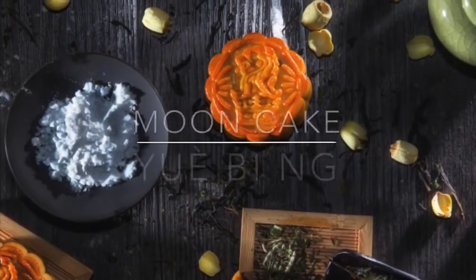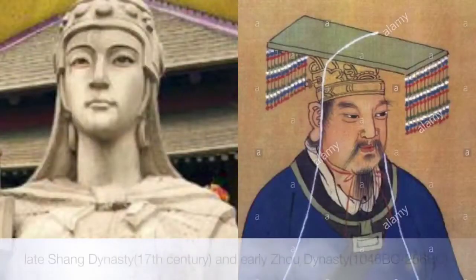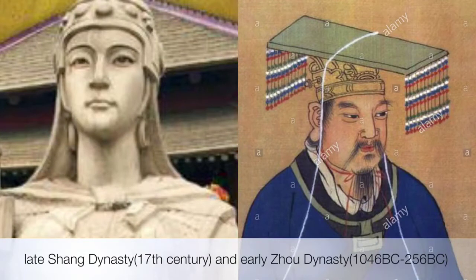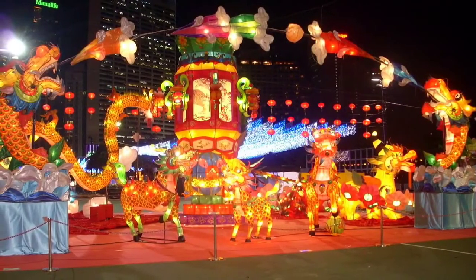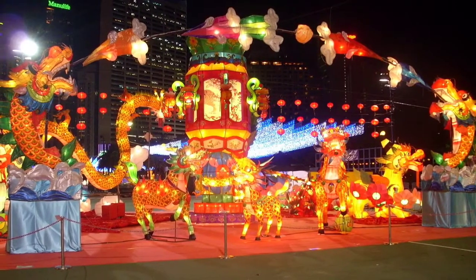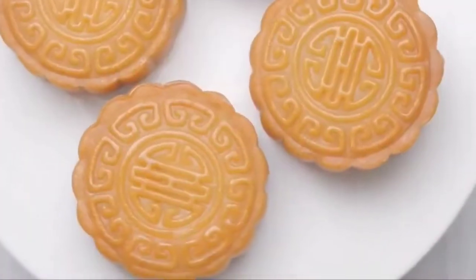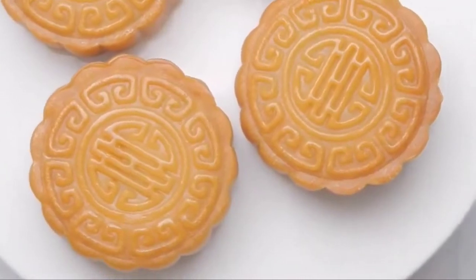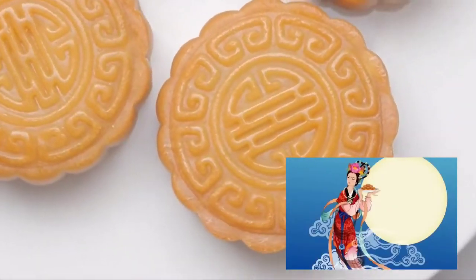Third on our list: Moon cake. Time of origin: late Shang dynasty and early Zhou dynasty. Moon cake is a traditional Chinese food for mid-autumn festival. It is round, which symbolizes family reunion. It is also a sacrificial offering to Moon God on mid-autumn festival.